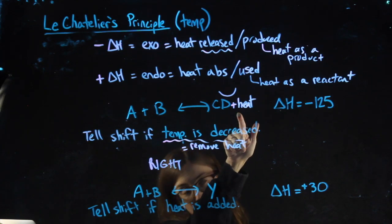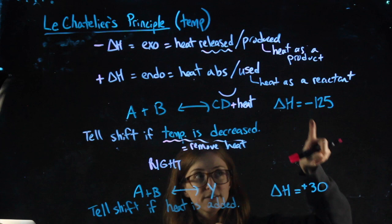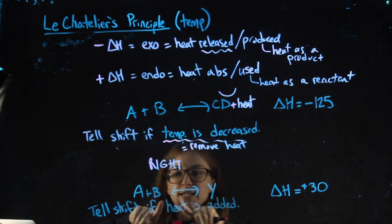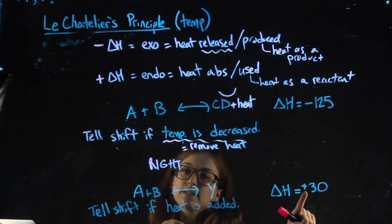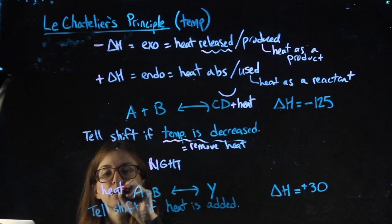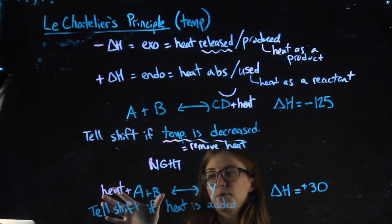That's because heat was over here. Heat was over here because delta H was negative. This was given. You'll never have to find it. Whereas in this question, in this example, delta H is positive. So I'm going to treat heat like a reactant. I'm going to put it on the left side with A and B.